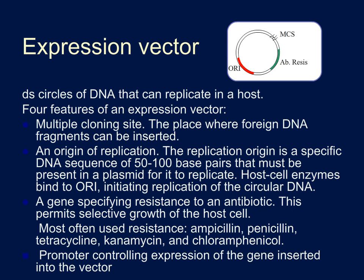An expression vector is a double-stranded circular piece of DNA that can replicate in a host. Four requirements of an expression vector are: multiple cloning sites, which are a variety of restriction sites in one area that allow you to clone or ligate your gene of interest into the vector; an origin of replication, required for the plasmid to replicate within the host cell; a gene specifying antibiotic resistance for selection; and a promoter controlling the expression of the gene inserted into the vector.